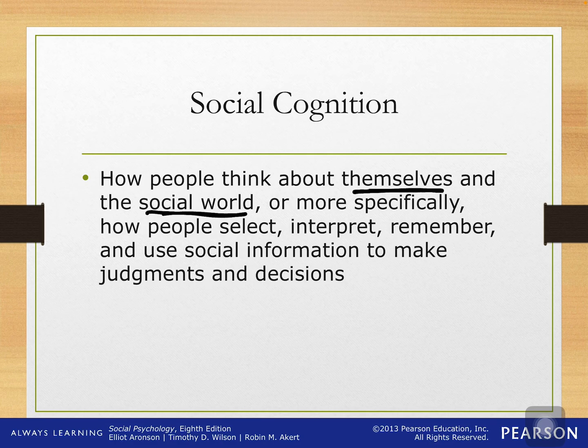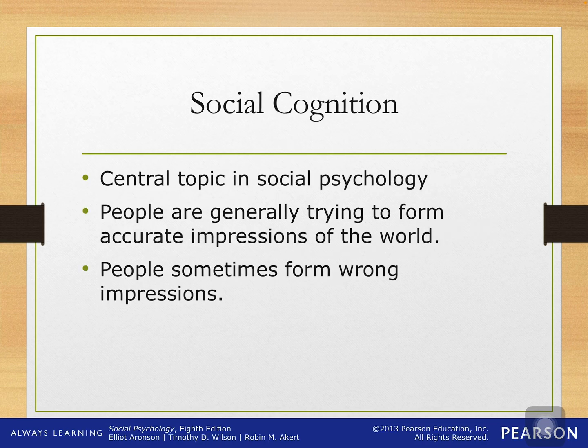This idea of social cognition is really important because it really dictates how we behave in certain situations, how we interpret those situations, and sometimes how we incorrectly interpret situations which changes how we behave. It's a central topic in social psychology because it's so important to how we navigate our environment. We're constantly trying to be accurate in terms of how we view the world and our impression of the people around us.